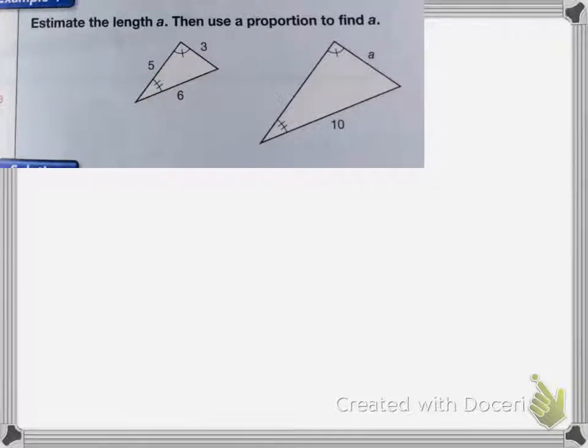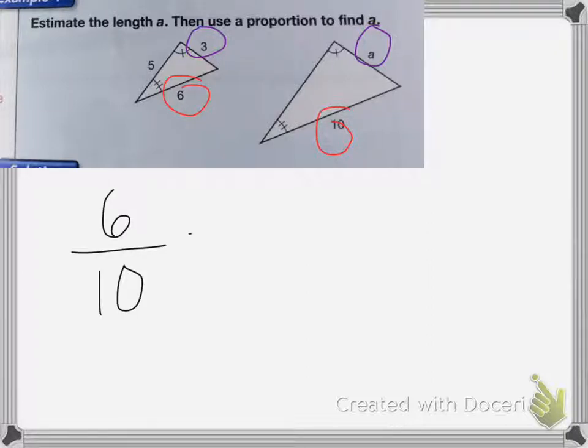So side A is the same as this side with 3. We have to figure out what the proportion is for A or between the triangles. I can use two sides to create a proportion to solve for A. I'm going to use the sides 3 and A and 6 and 10. So my proportion is going to look like this: 6 over 10 equals 3 over A.